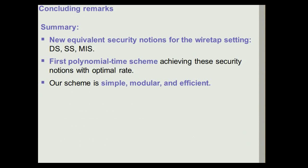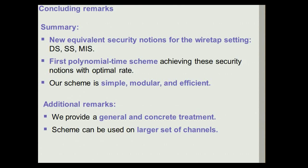To wrap up: we revisited the problem of secure communication in the wiretap channel model. On one hand, we provided new security notions to define privacy based on a cryptographic viewpoint, modeling security for arbitrary messages. We also devised the first polynomial-time scheme that achieves these security notions and in many settings achieves optimal rate. Our scheme is simple, modular, and efficient — its efficiency is essentially that of the underlying error-correcting code. The results extend to a much larger class of channels beyond binary symmetric channels. Thank you.